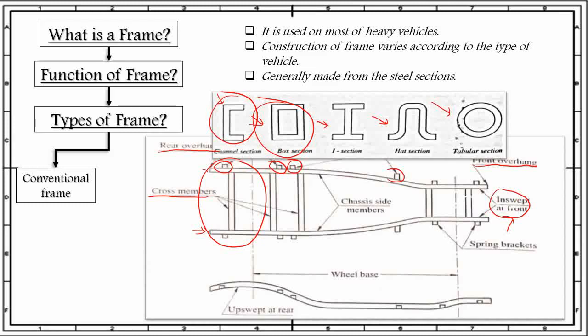The I section, tubular, and hat sections are normally used for cross members. These three are basically used only for this type of construction.